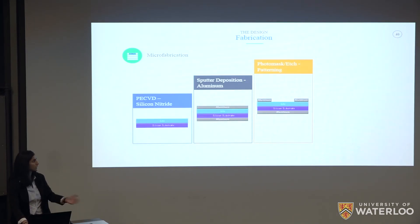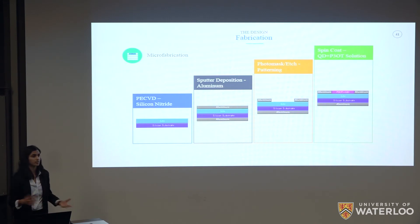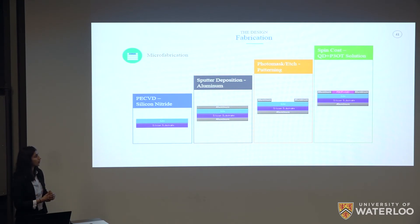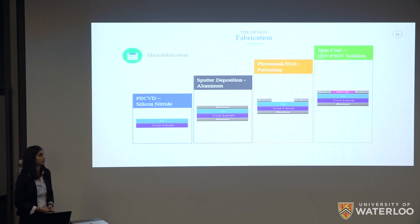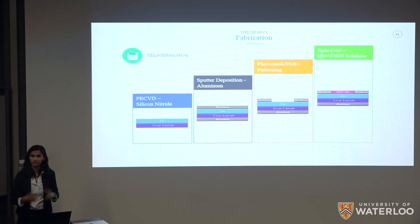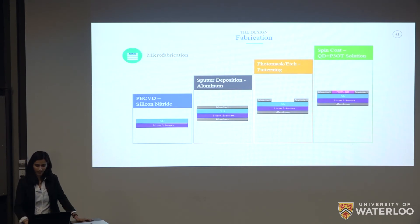Once photolithography was performed, excess aluminum was etched away using PAN etchant. We then spin-coated our polymer quantum dot solution onto the top surface, considering spin speed, timing, baking temperature, and time. Based on experimentation and research, we chose 900 RPM for one minute, followed by one hour of baking at 60 degrees Celsius in a vacuum oven to ensure the film properly adhered. We then scratched off the polymer on the source and drain electrodes to expose the aluminum for electrical contact during testing.